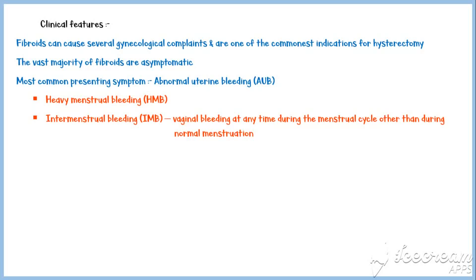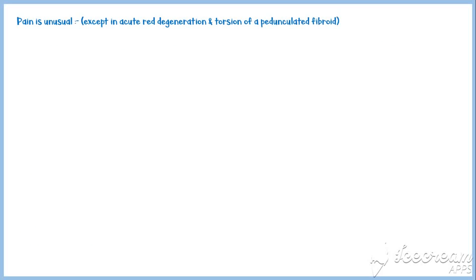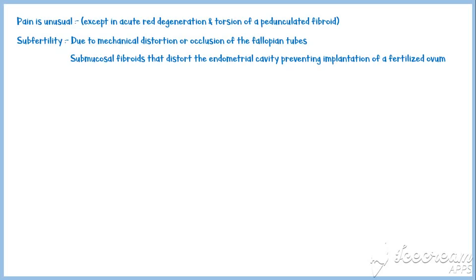Other less common symptoms include dyspareunia or pain during sexual intercourse, pelvic pain, urinary frequency, bladder and bowel dysfunction, subfertility, and recurrent pregnancy loss. Pain is unusual, except in the special circumstances of acute red degeneration or torsion of a pedunculated fibroid. Subfertility occurs due to mechanical distortion or occlusion of the fallopian tubes, and submucosal fibroids that distort the endometrial cavity, preventing implantation of a fertilized ovum. Surgical removal of submucosal fibroids may enhance fertility.